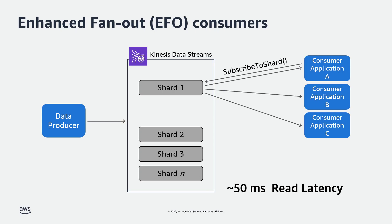This feature is supported by Amazon Lambda, Apache Flink, Kinesis Client Library, and more. In this example, Shard 1 has been set up with three EFO consumer applications. As a result, these three will not have to fight for bandwidth with other applications.